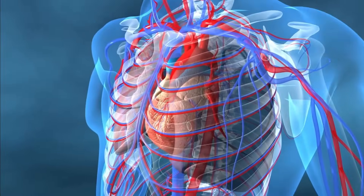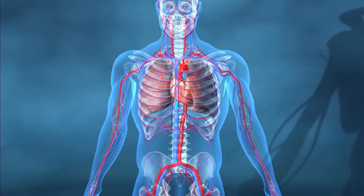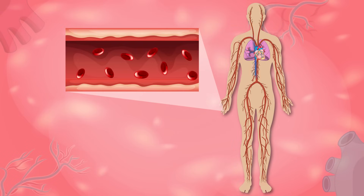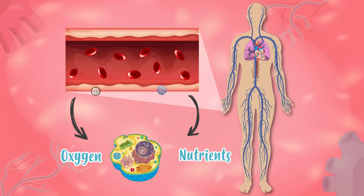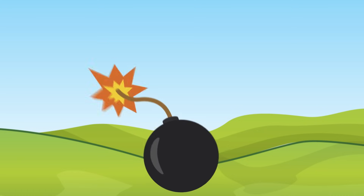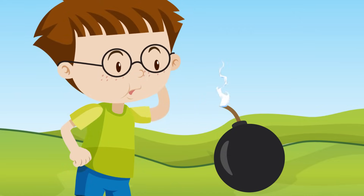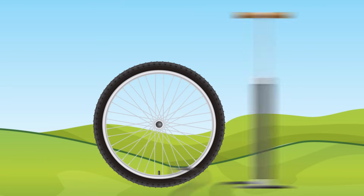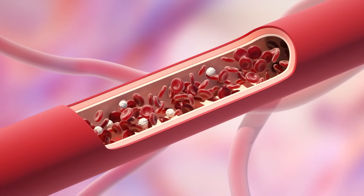We say that it's very special because it sends blood all over our body. Blood delivers oxygen and nutrients we need to live to all of our cells. A heart is a type of pump, like the ones we use to inflate the wheels on our bikes. The only thing is, that instead of pumping air, it pumps blood.